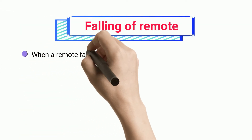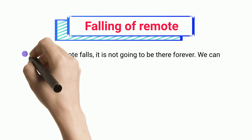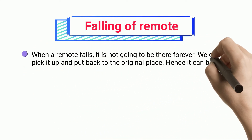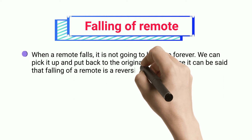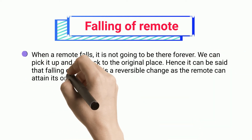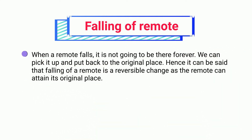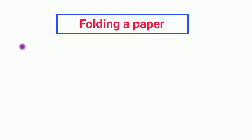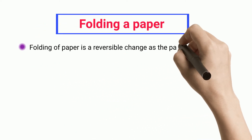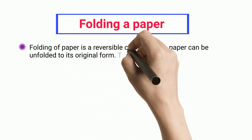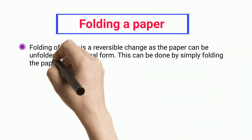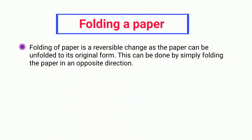Falling of Remote: when a remote falls, it is not going to be there forever. We can pick it up and put it back to the original place. Hence, falling of a remote is a reversible change as the remote can attain its original place. Folding of Paper: folding of paper is a reversible change as the paper can be unfolded to its original form. This can be done by simply folding the paper in the opposite direction.